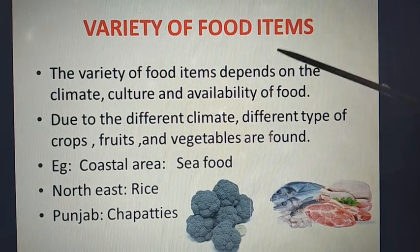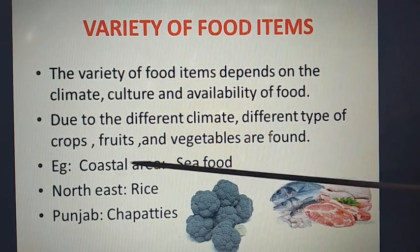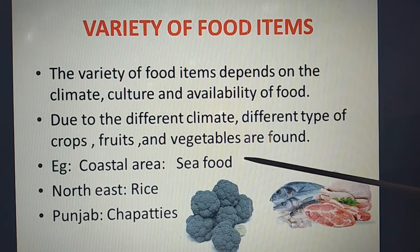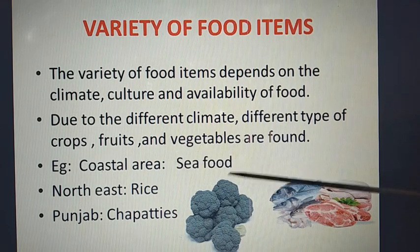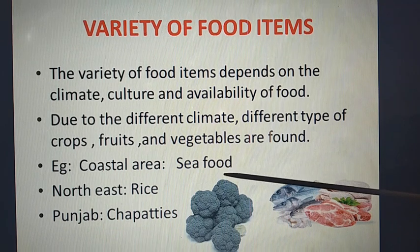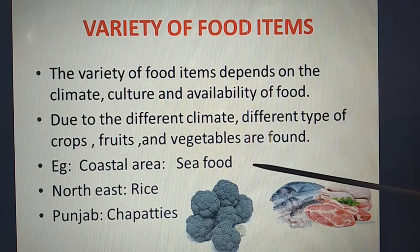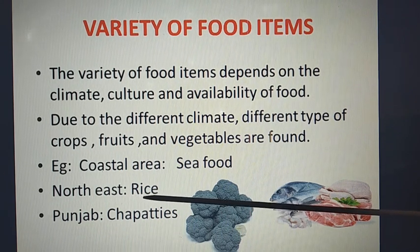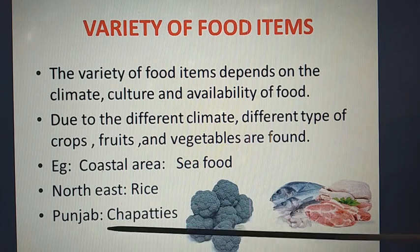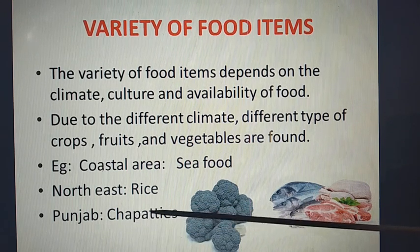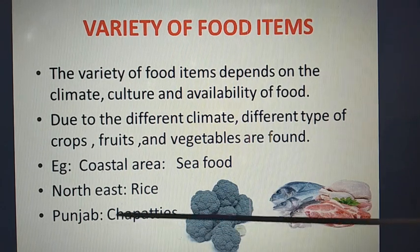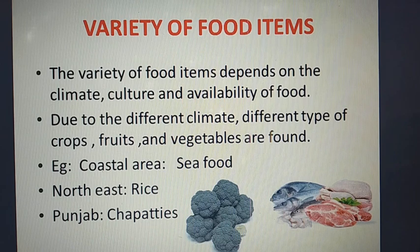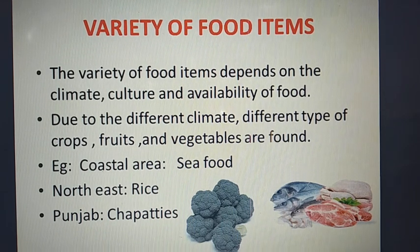For example, in coastal areas, seafood is available in large quantities, so the main food items are seafoods such as fish, prawn, and other things. In the northeast of India, the cultivation of rice is very high, so the main food item is rice. In Punjab, the wheat crop is good, so the people mostly eat chapatis. It totally depends on the availability of food in the particular area.